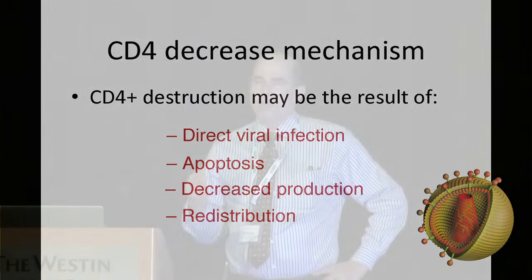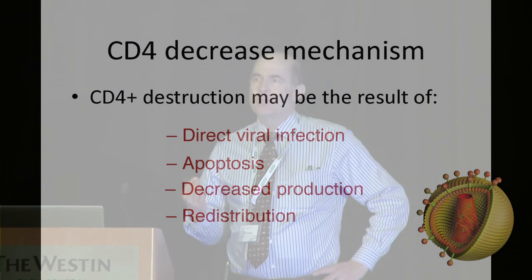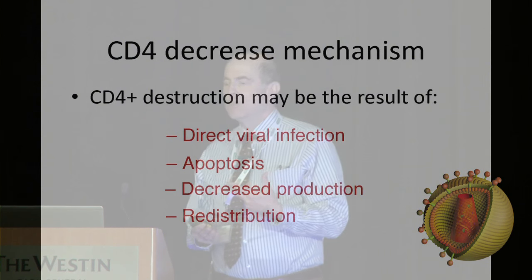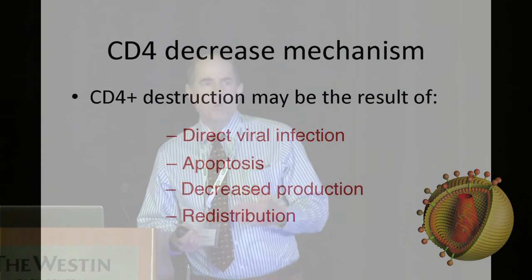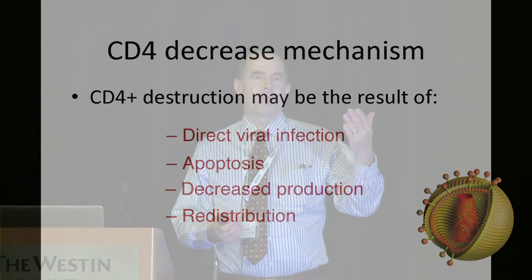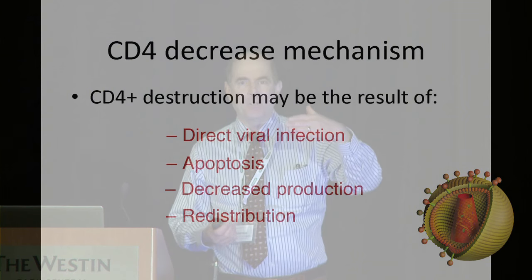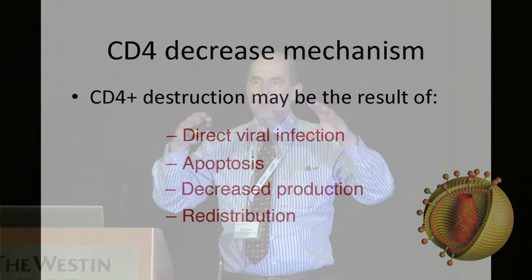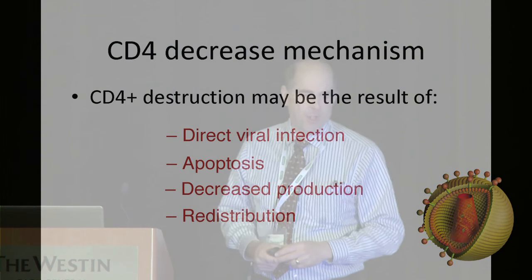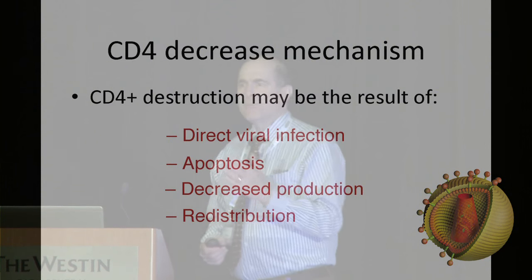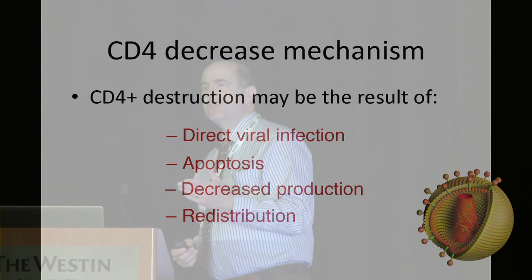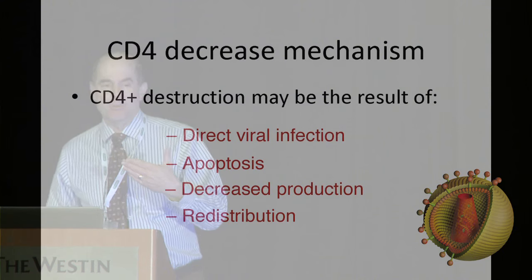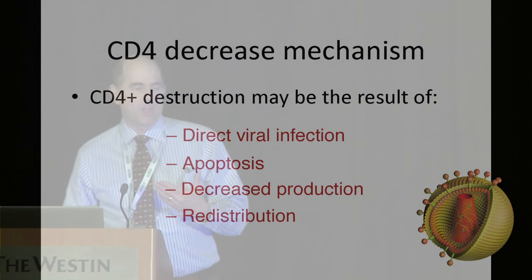CD4 cell loss occurs for a variety of reasons. One is direct virus infection — the virus infects and multiplies in CD4 cells, eventually destroying them. But the virus can also induce the cell to enter apoptosis, or programmed cell death — essentially cellular suicide.